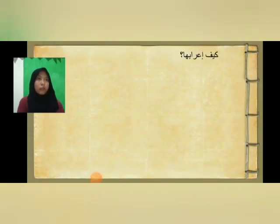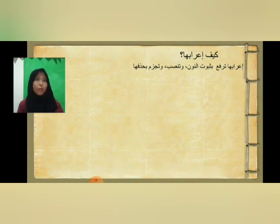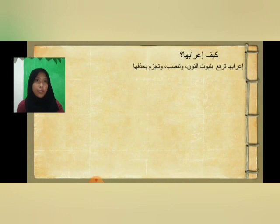Bagaimana i'robnya? I'robnya: dirafa'kan dengan subutun nun (tetapnya nun), dinasopkan dengan membuang huruf nun, dan juga dijazamkan dengan membuang huruf nun.